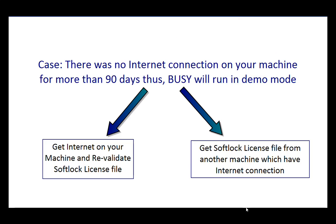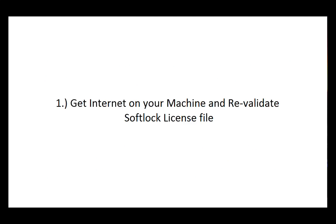Next we'll discuss the case where you don't have internet on a machine for more than 90 days — Busy will then run in demo mode. In such a case, you need to do one of two things: either provide internet on that machine and revalidate the softlock file, or get a duplicate license file using the Get License File option. First, we'll discuss the case of providing internet and revalidating.